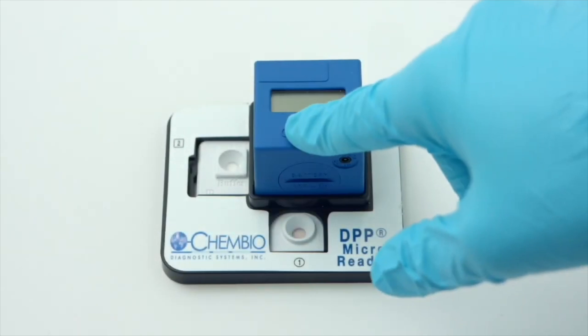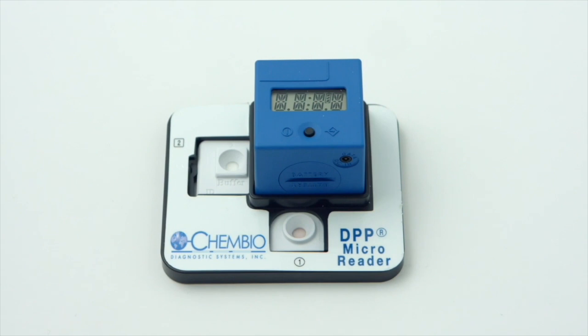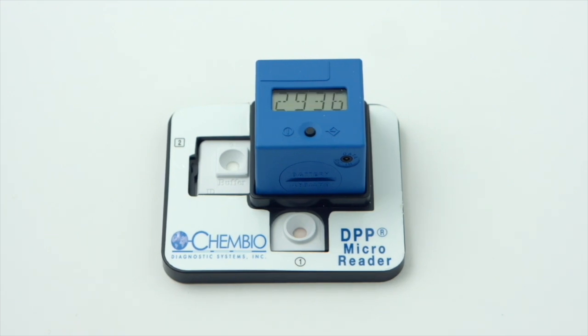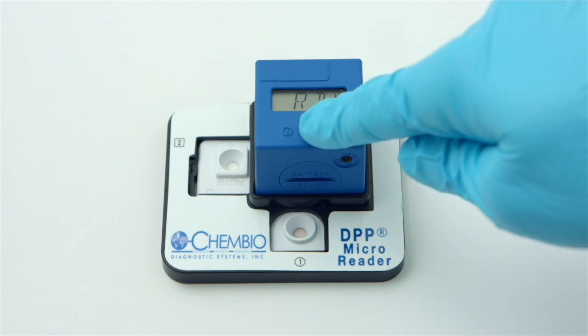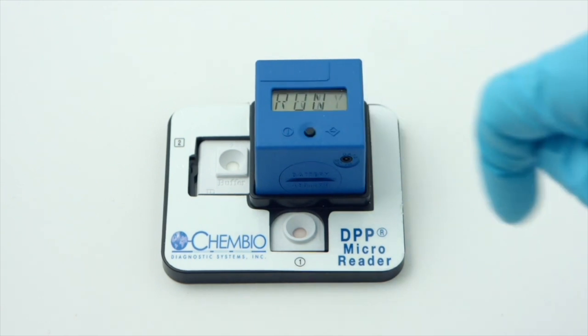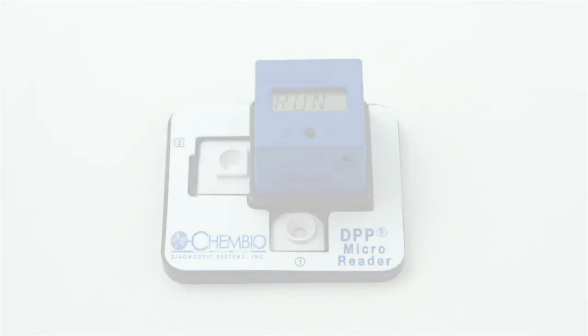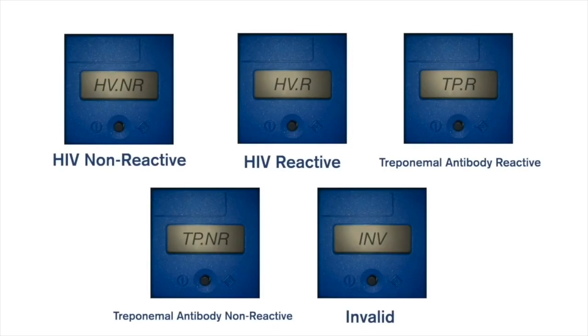Press the button on the DPP microreader. The display segments will illuminate, show the number of remaining tests and display RDY ready to read. Press the button a second time and the display will show Run. The results will scroll on the screen.